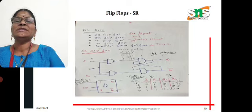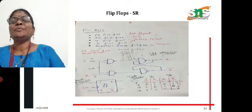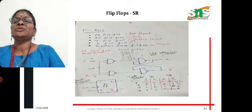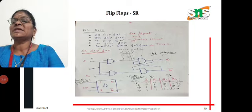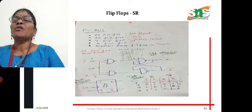Initially, let us assume Q equals 0 and Q bar equals 1. Now, what will be the next state if we apply inputs S and R with a clock pulse? The cross-coupled circuit feeds part of the output back as an input to the NAND gate. For the SR flip-flop with 2-bit inputs, the combinations are: 00, 01, 10, and 11. The first condition is when the clock pulse is high (1), S is 0, and R is 0.